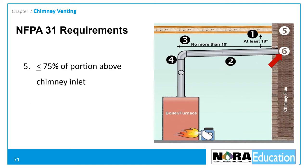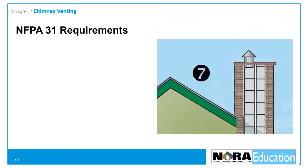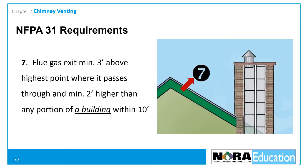Additionally, the flue pipe must not be longer than 75% of the portion of the chimney above the chimney inlet. For example, if the chimney extends 20 feet above where the flue pipe connects, the flue pipe can be no longer than 15 feet. In masonry chimneys, the flue pipe must extend through the chimney wall to the inner face or liner, but not beyond, and shall be firmly cemented in place. The flue gas exit of the chimney must be at least three feet above the highest point where it passes through the roof, and at least two feet higher than any portion of a building within 10 feet of the chimney.